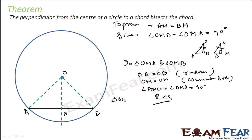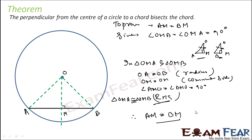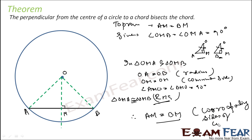Triangle OMA is congruent to triangle OMB. Since these two triangles are congruent, the corresponding sides will be equal — that is, AM is equal to BM. Therefore AM is equal to BM by corresponding sides of congruent triangles.